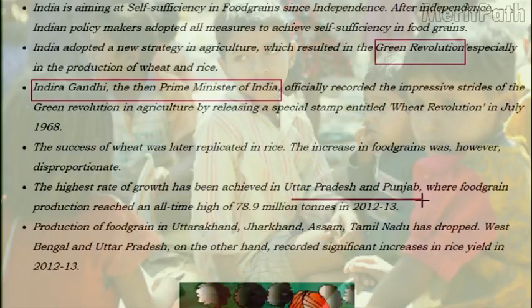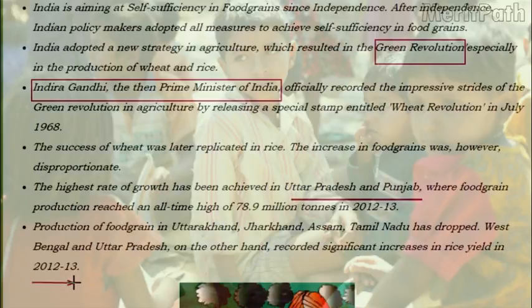The states of Maharashtra, Madhya Pradesh, Bihar, Orissa and the northeastern states did not show any significant rise in food grain production. During 2012 and 2013, the production of food grains in Uttarakhand, Jharkhand, Assam and Tamil Nadu dropped, while West Bengal and Uttar Pradesh recorded significant increases in rice yields in the same years.